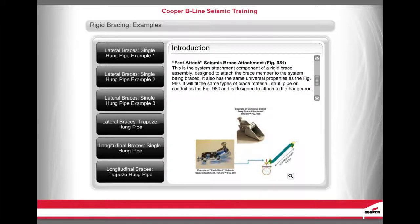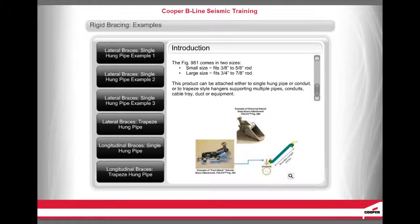The Fast Attach Seismic Brace Attachment, Figure 981, is the system attachment component of a rigid brace assembly, designed to attach the brace member to the system being braced. It has the same universal properties as the Figure 980, fitting strut, pipe, or conduit, and is designed to attach to the hanger rod. The Figure 981 comes in two sizes: small fits 3/8 inch to 5/8 inch rod, and large fits 3/4 inch to 7/8 inch rod. It can be attached to single-hung pipe or conduit, or to trapeze-style hangers supporting multiple pipes, conduits, cable tray, duct, or equipment.